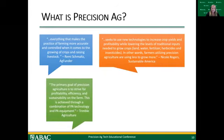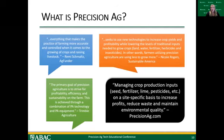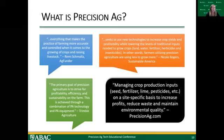Another definition says the primary goal of Precision Ag is to strive for profitability, efficiency, and sustainability on the farm, achieved through a combination of Precision Ag technology and equipment. The definition I like to work with is that it's managing crop production inputs on a site-specific basis in order to increase profits, reduce waste, and maintain environmental quality. Notice there's nothing that says you have to use drones or robotics — those are great tools, but Precision Ag itself is just a management strategy.